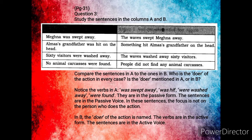So, if we see the first column: 'Meghna was swept away' and 'the waves swept Meghna away.' In this, who is the doer? In column B, the doer is the waves, as it swept Meghna away.